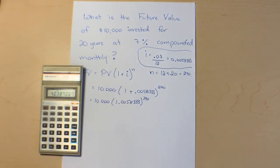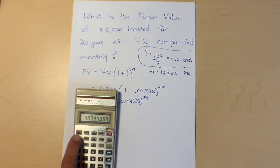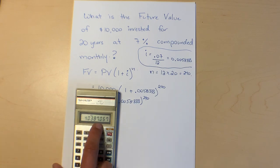And I'm getting 4.038 and some other stuff. So this whole chunk of stuff here is equal to 4.038. And now I'm going to multiply by 10,000 and we get 40,387.